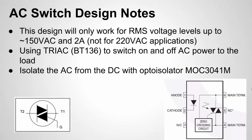A triac can be used to switch AC power on and off. If you look at the bottom left, there's a triac. It's like a diode going two different ways, so it can allow positive and negative voltage to pass — which is what we need for AC. It has a gate to control it on and off.